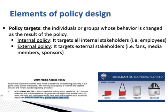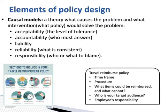The second element of policy design is we need to develop causal models. When we develop a policy, we have to think from a very different perspective and understand what kinds of issues might be involved. In this policy, we try to address all the different aspects we've considered when developing or creating these policies. The causal model is a theory about what causes the problems and about the interventions that will help us solve the problems. The causal model includes five different aspects. The first one is acceptability — the level of tolerance, how likely we're able to accept these situations.